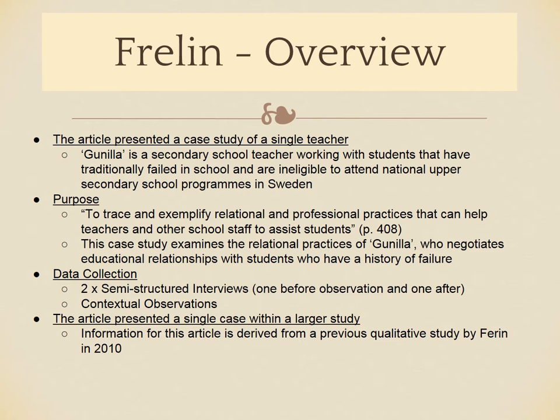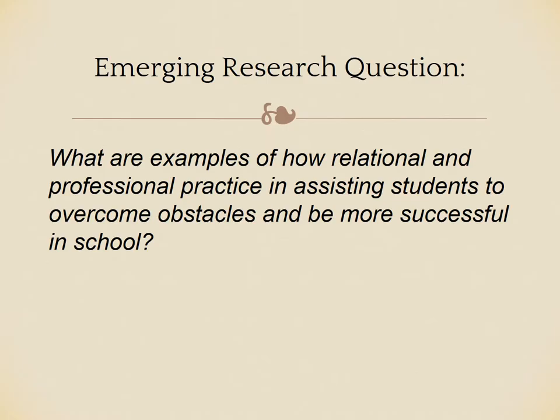We have information about the purpose taken straight from the article and the way that data was collected: two semi-structured interviews and a contextual observation. The emerging research question is: what are examples of how relational and professional practice is assisting students to overcome obstacles and be more successful in school? This really came from the purpose explicitly stated in the article — what are specific examples from this one teacher? How did Gunila accomplish these things?